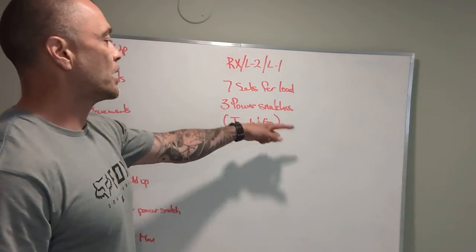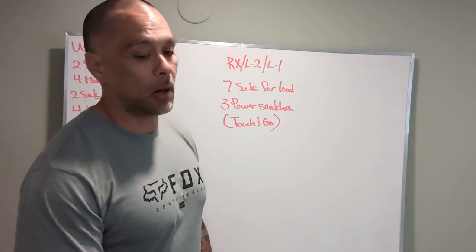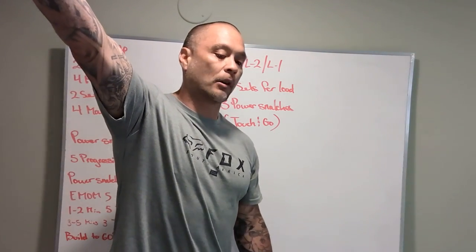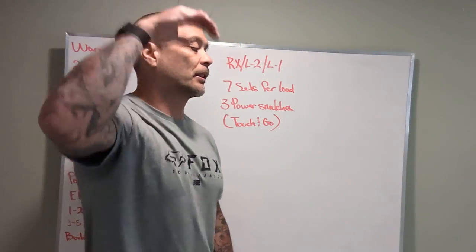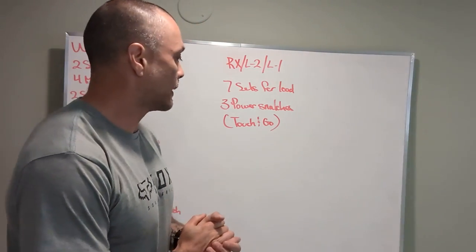7 sets for load, 3 power snatches. Those are touch and go reps. The bar is going to start from the ground, magically appear over our head. It is performed with the snatch, catching in above parallel.